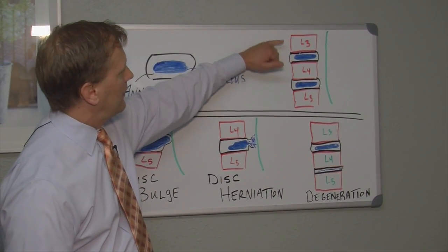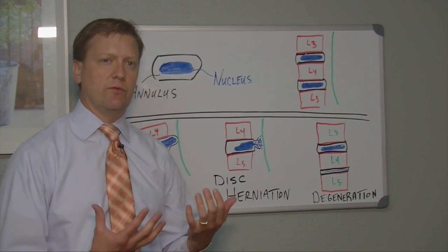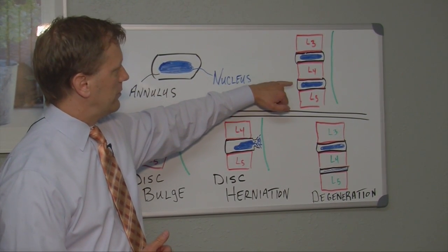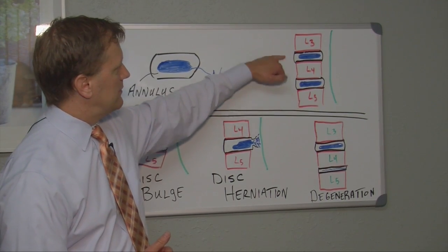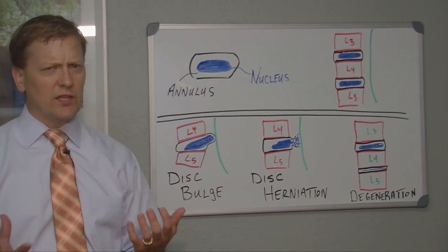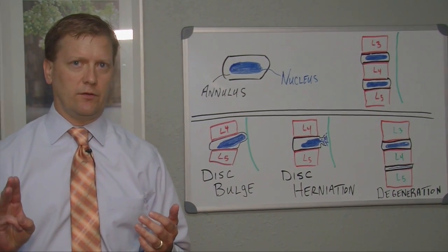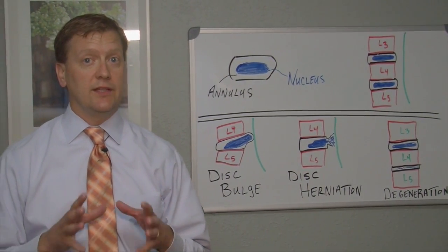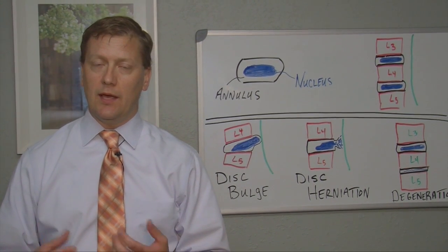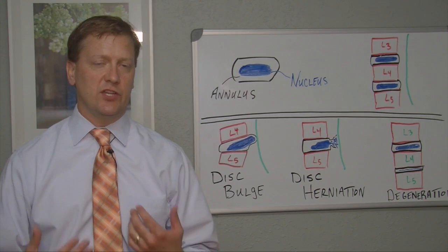Here I'm depicting L3 — the lumbar spine number three vertebra — and then the fourth and fifth vertebra. We've got a disc that sits in between each one of those. So what can go wrong with the disc? There are mainly three things: you can get a disc bulge, you can get a disc herniation, and thirdly you can end up with what's called disc degeneration.